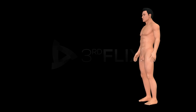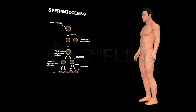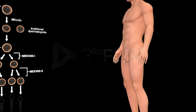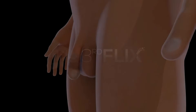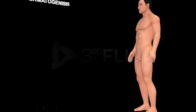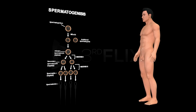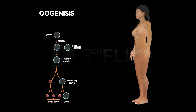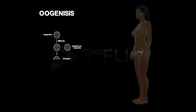Gametogenesis is the process of formation of gametes. It occurs in the primary sex organs, i.e., the gonads. Gametogenesis is under hormonal control. The process of formation of the sperms, i.e., male gametes, is known as spermatogenesis. The process of formation of the ova, i.e., the female gametes, is known as oogenesis.